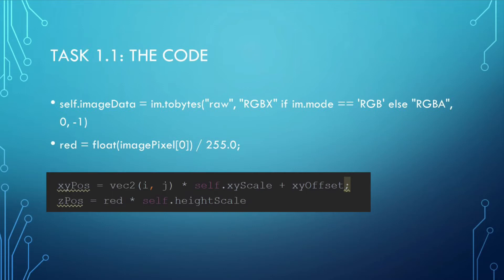The variable red then carries the normalized red channel value by dividing 255, as in 8-bit color space the red channel value is between 0 and 255. Red equals float(imagePixel[0]) divided by 255.